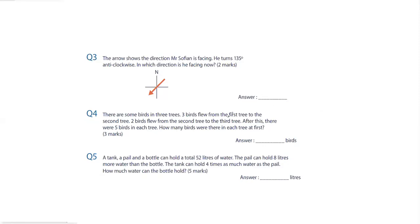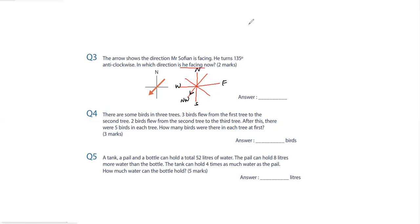Question three: the arrow shows the direction Mr. Sofian is facing. He turns 135 degrees anticlockwise. In which direction is he facing now? We can draw this with compass directions — North, South, East, West — and also Northeast, Northwest, Southeast, Southwest.